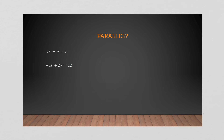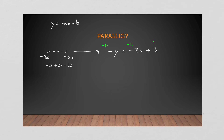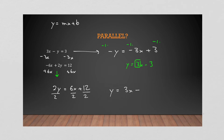Let's look at another example. Subtract 3x from both sides to get -y = -3x + 3, then multiply everything by -1 to get y = 3x - 3, giving a slope of 3. For the second line, add 6x to both sides: 2y = 6x + 12, then divide by 2 to get y = 3x + 6, also a slope of 3. Since both slopes are 3 and the y-intercepts differ, these two lines are parallel.